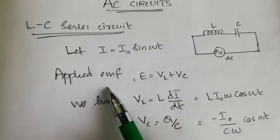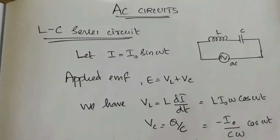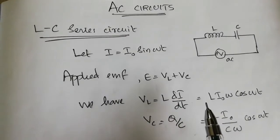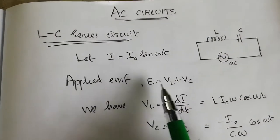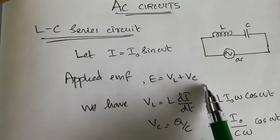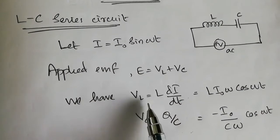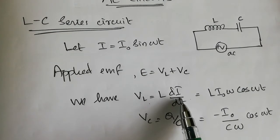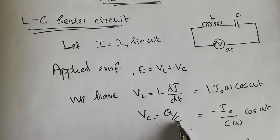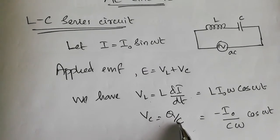As we know, the applied EMF across the LC series circuit has the resultant effect of VL plus VC. It should be equal to the net effect of VL plus VC. And we have VL equals L dI by dt, the voltage drop across the inductance, and VC equals Q by C, the voltage drop across the capacitance.